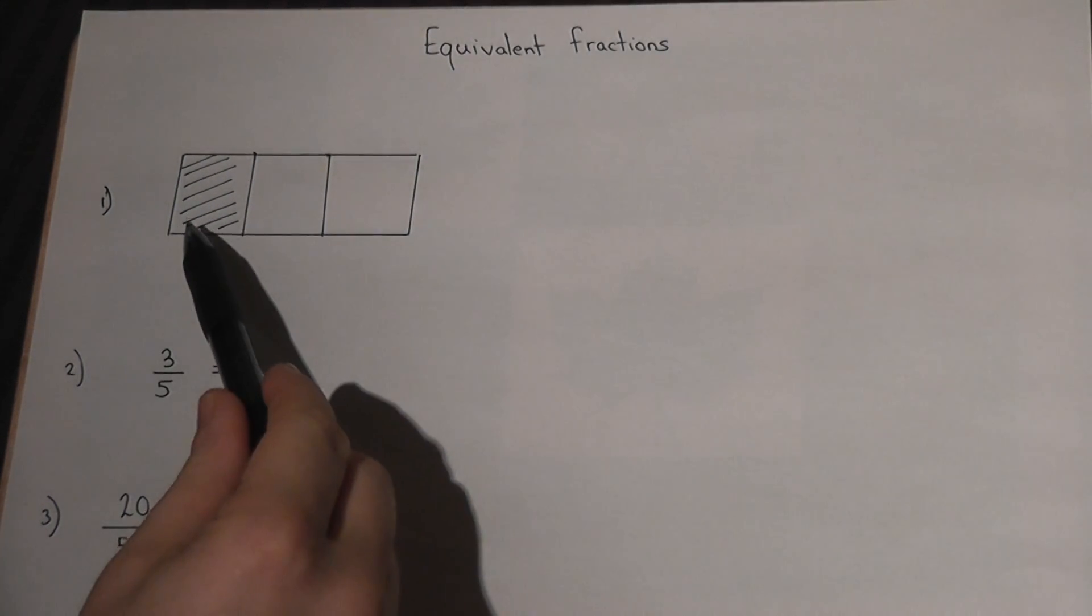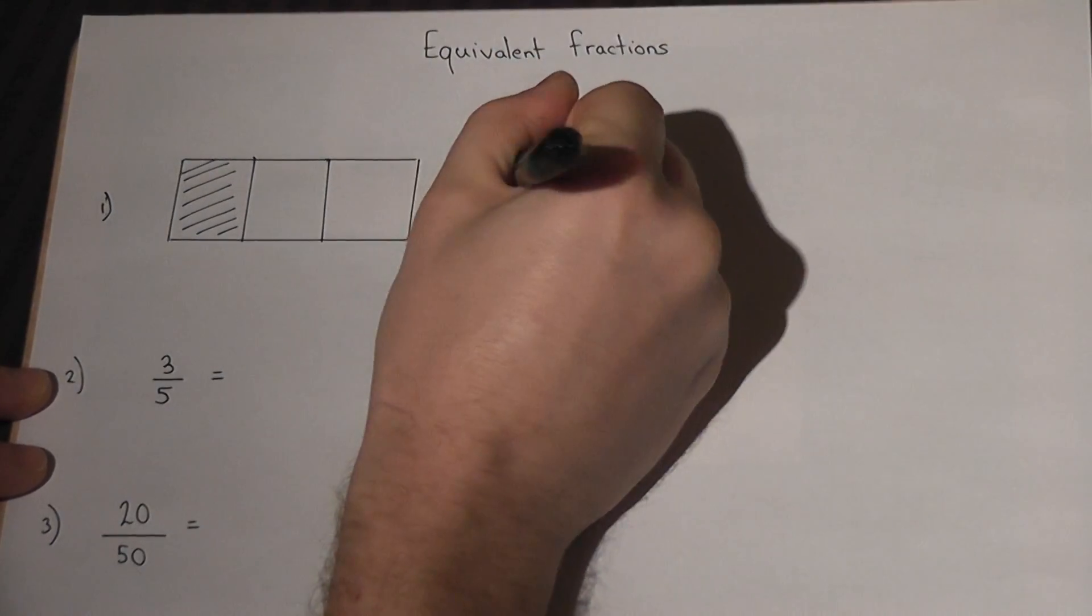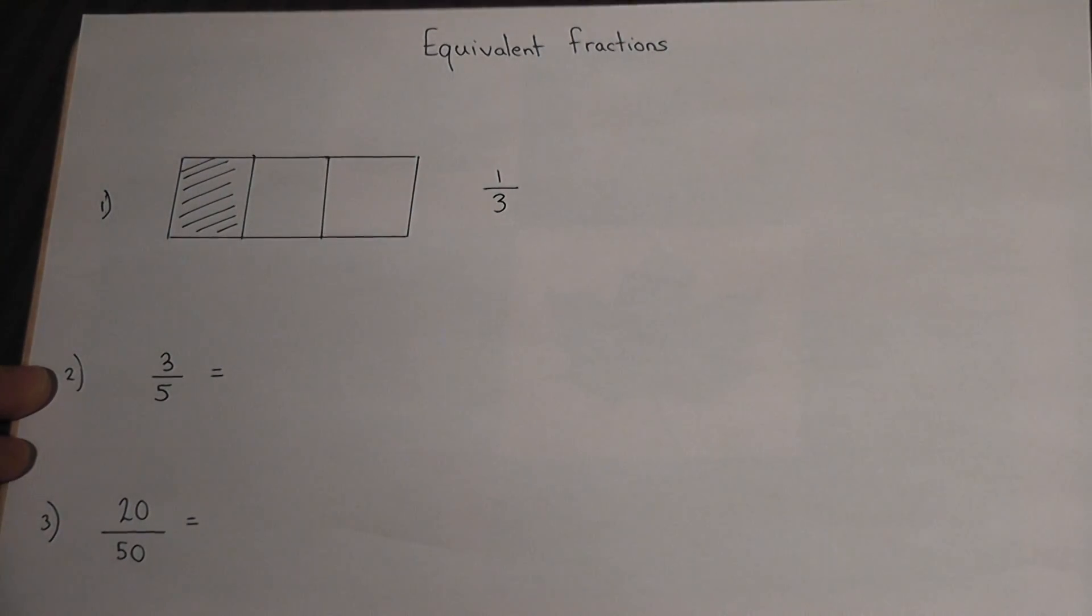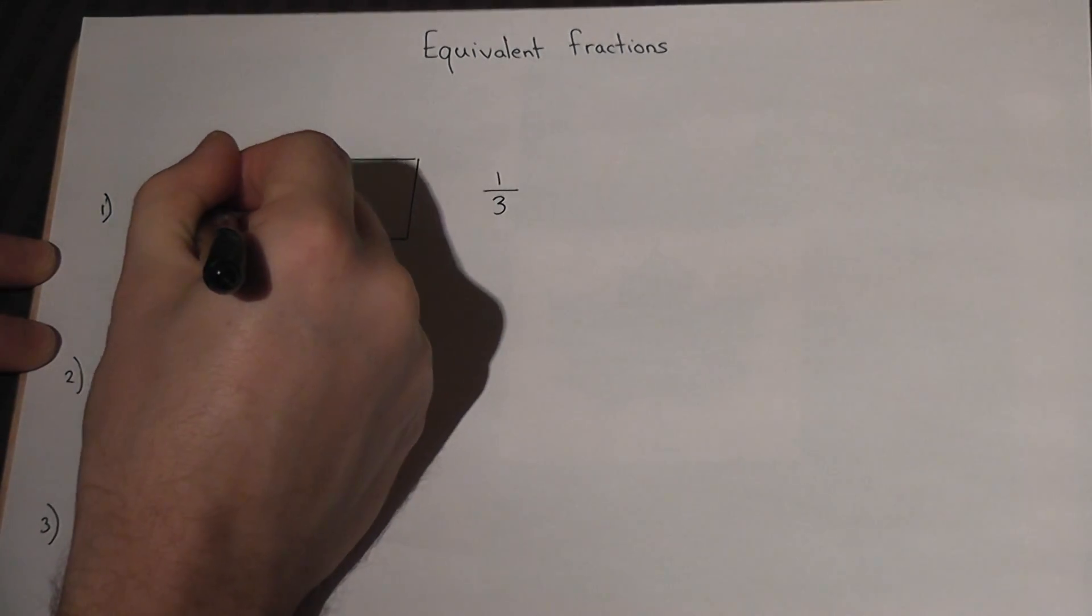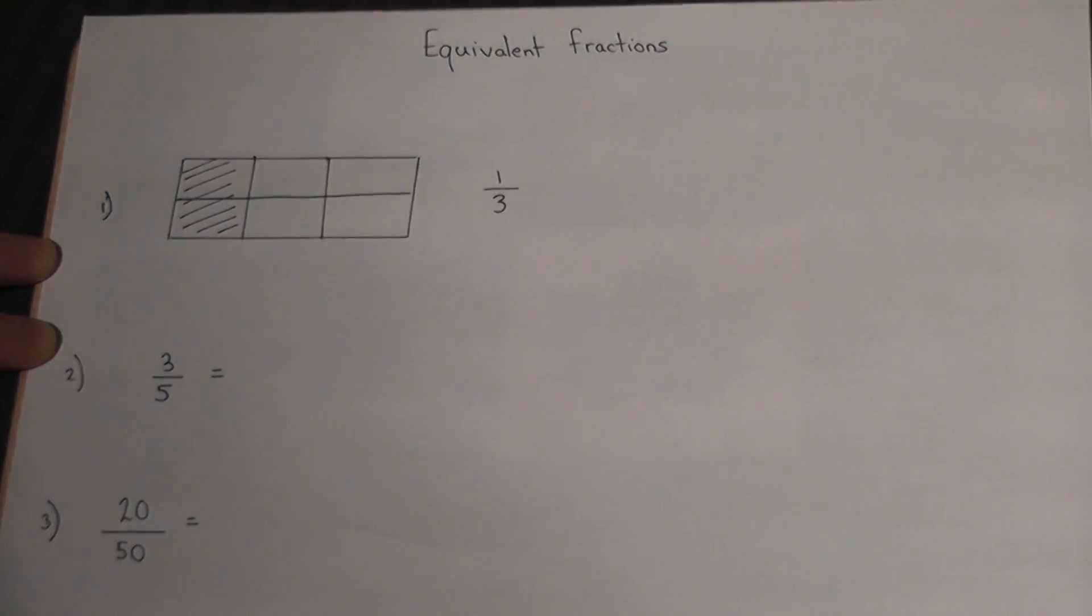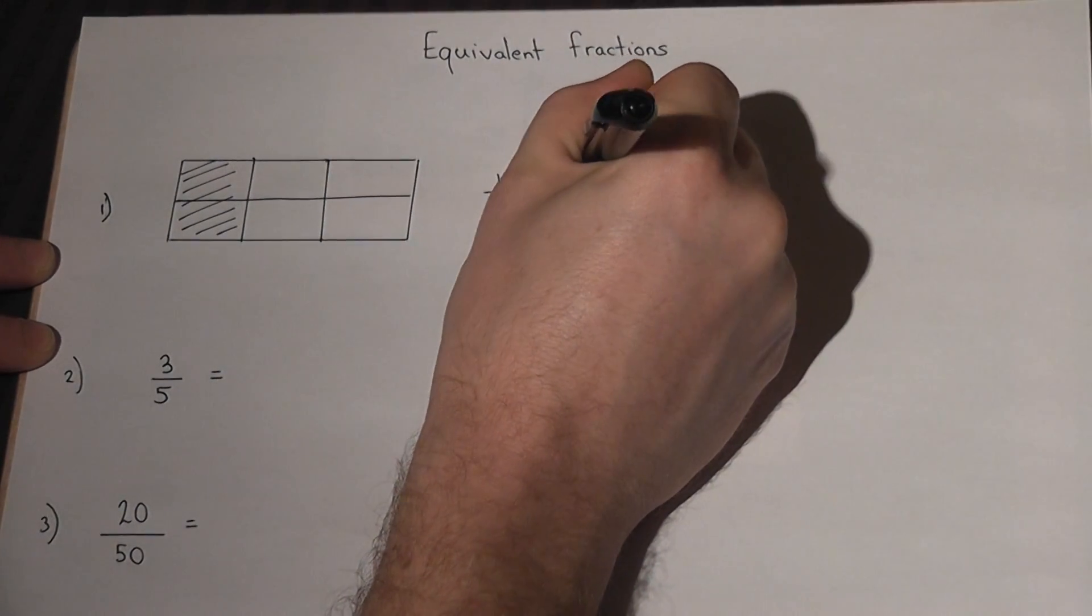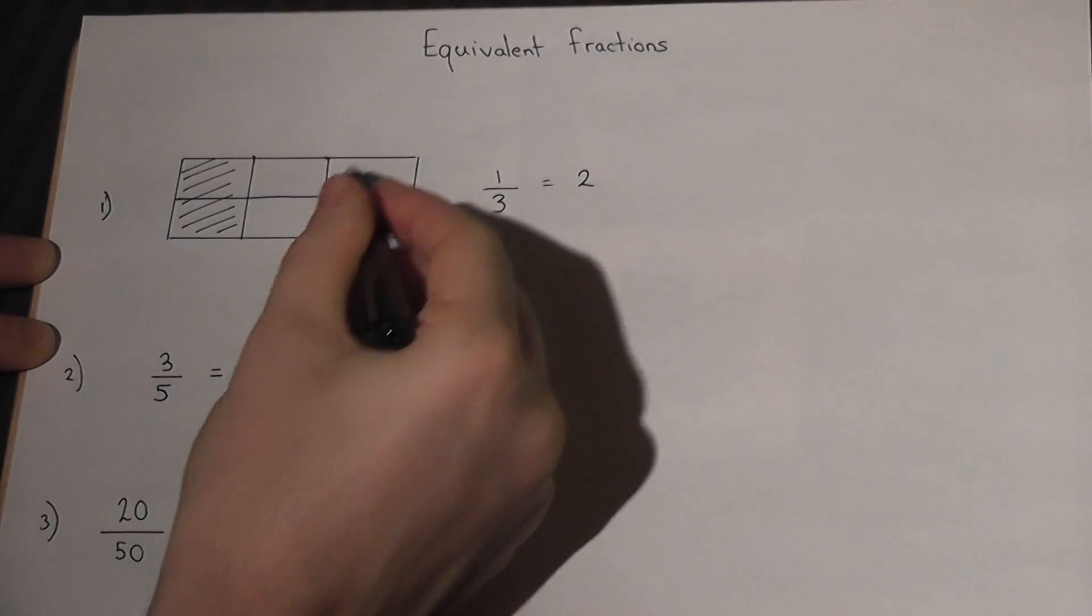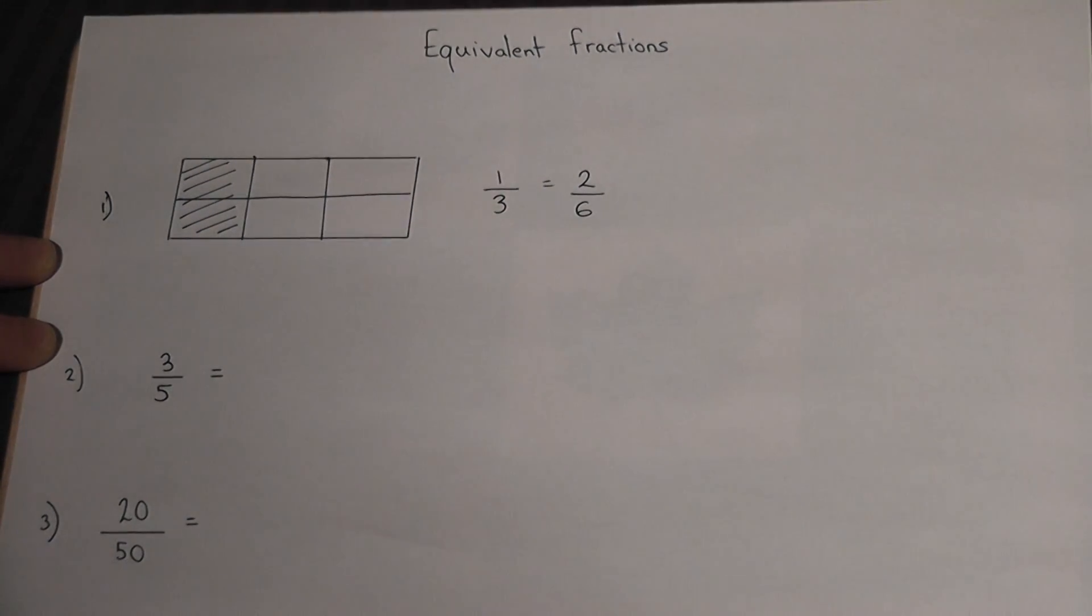The fraction given in the first example is one out of three, one third, but there are lots of ways of writing one third and these are called equivalent fractions. If you look at this simple diagram, if I draw a line through the center of that diagram, it is still the same fraction but there are now two parts shaded out of one, two, three, four, five, six.